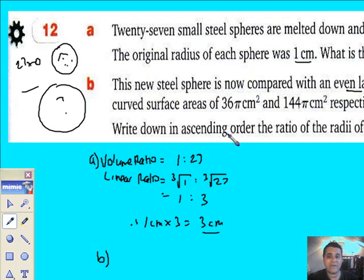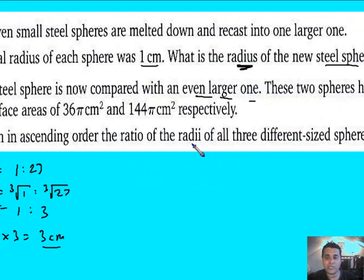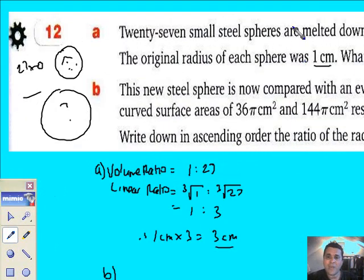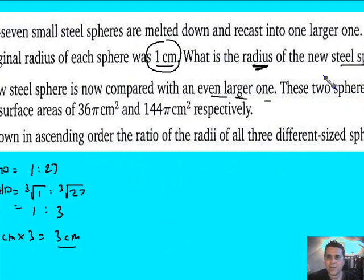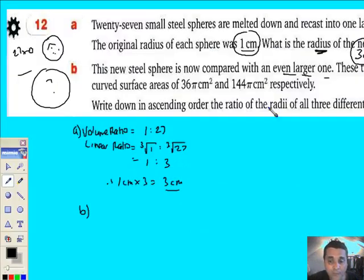Now, write down in ascending order the ratio of the radii of all three different sized spheres. Well, I know that one's got a radius of one. I know this one's got a radius of three centimetres. And I've now got to work out the radius of the even bigger one.